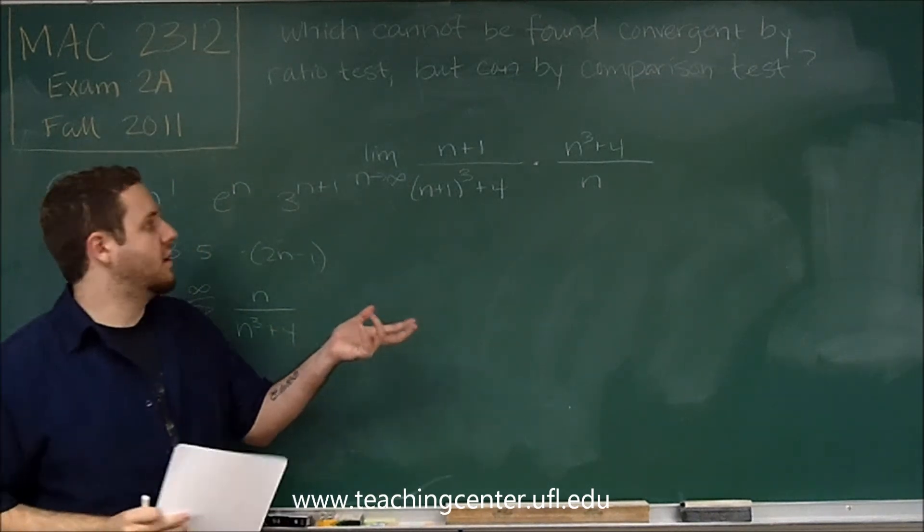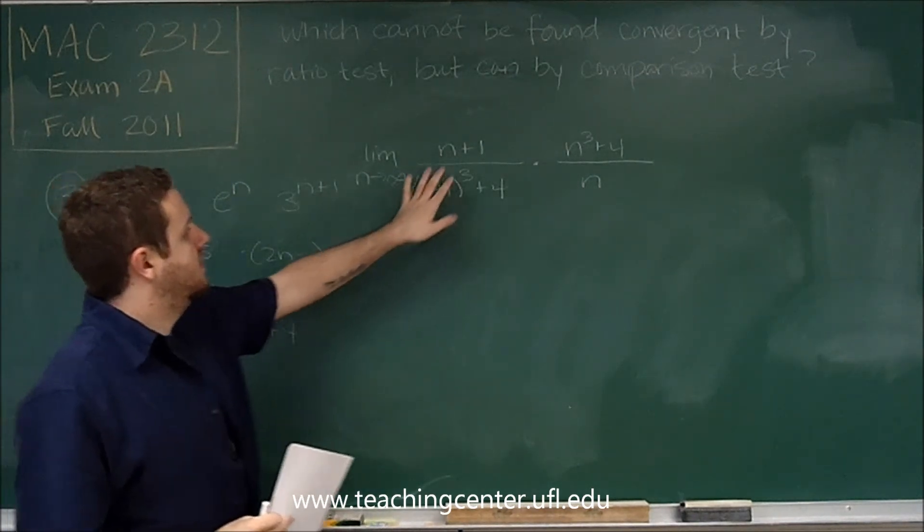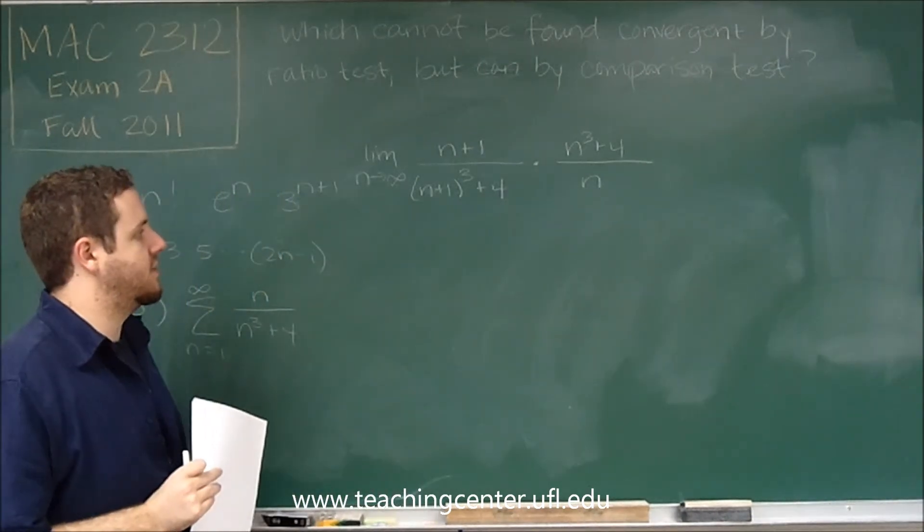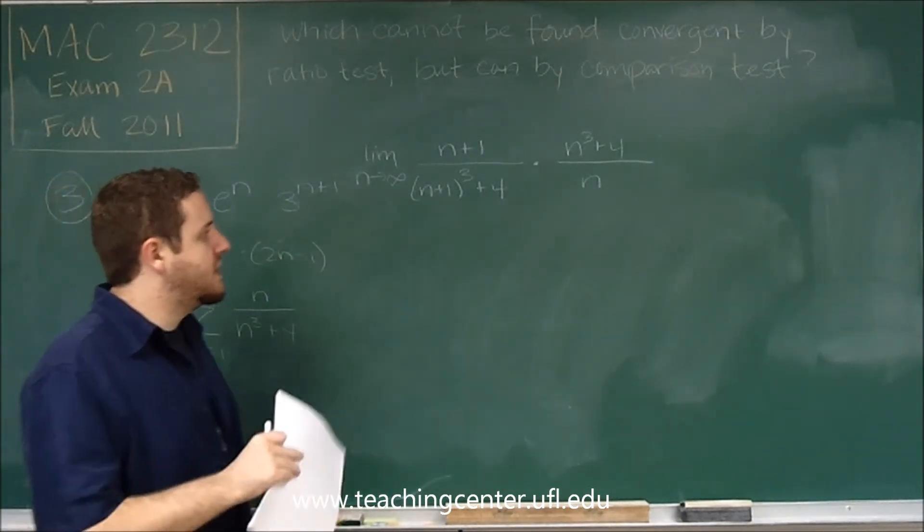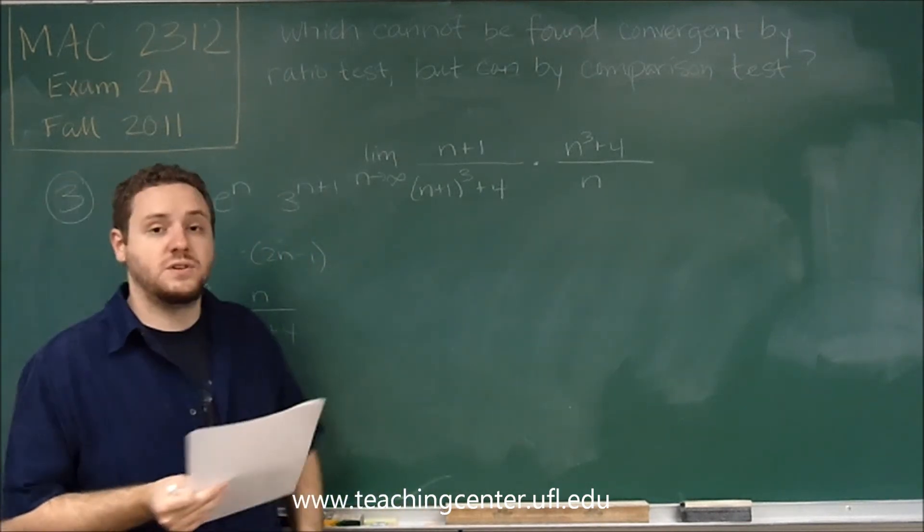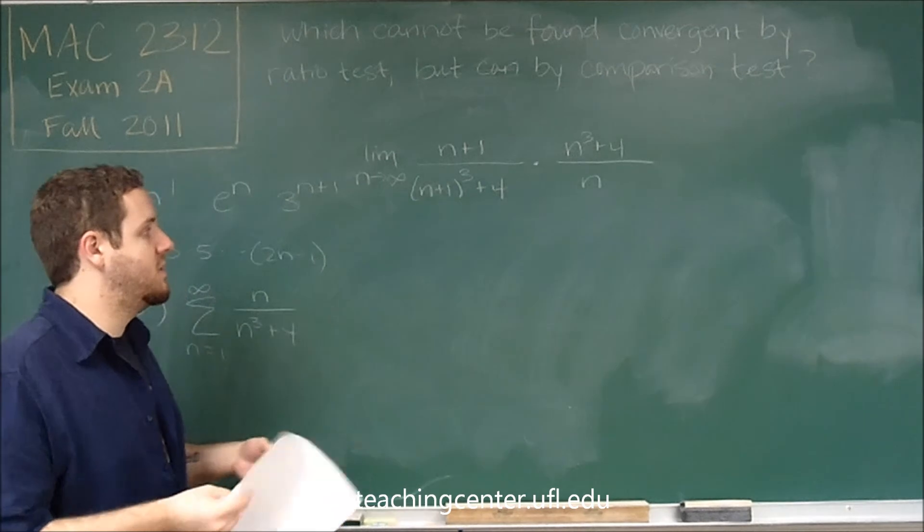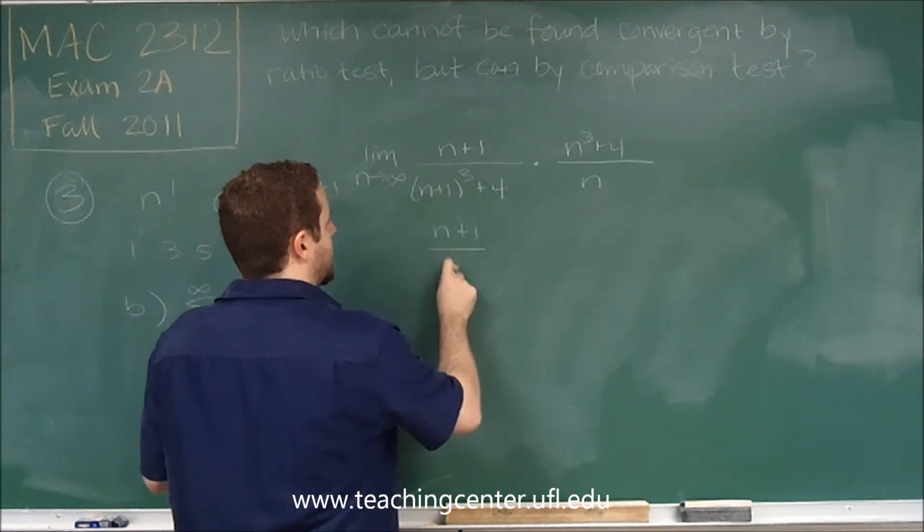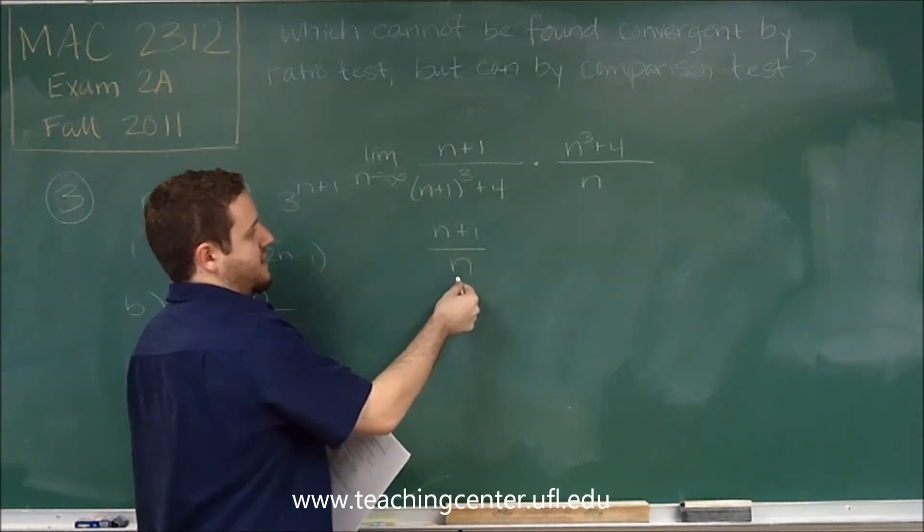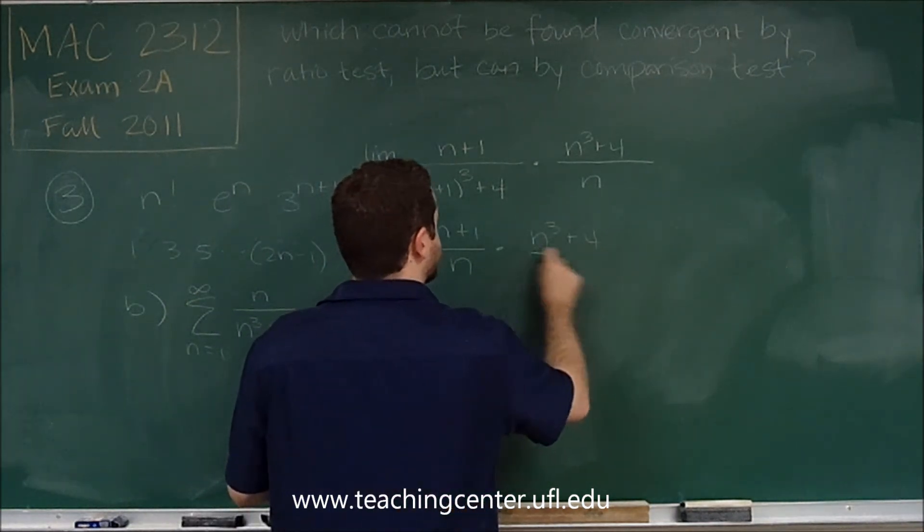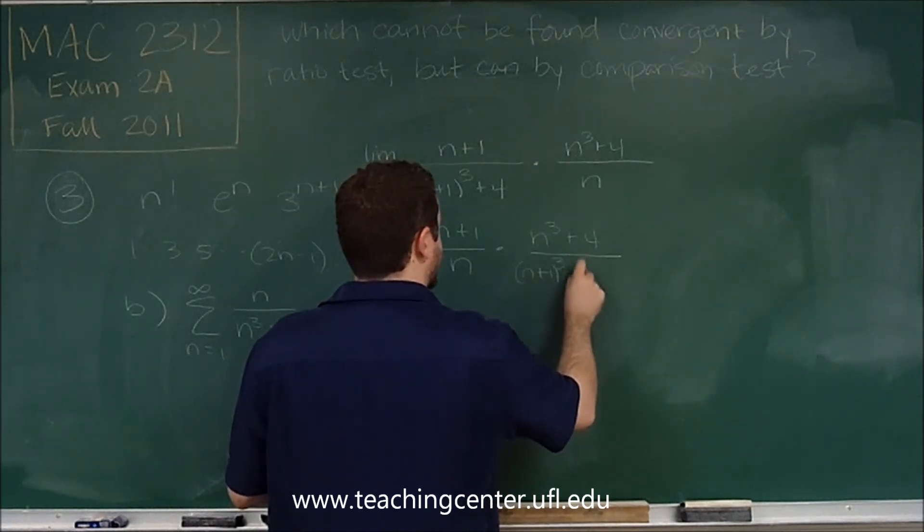And perhaps you already see a problem here. The problem is that the top is degree 4 and the bottom is degree 4, if you were to multiply these together. And the biggest term, the fourth degree terms, are all just going to have coefficients of 1. Another way you can see this is let's group these together in a slightly different manner. I'm going to put the n plus 1 over n together, and the n cubed plus 4 over the n plus 1 cubed plus 4 together.